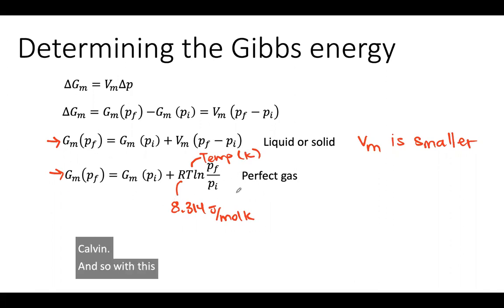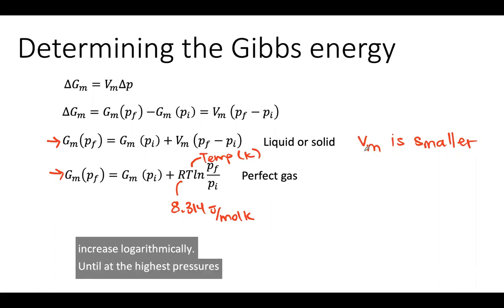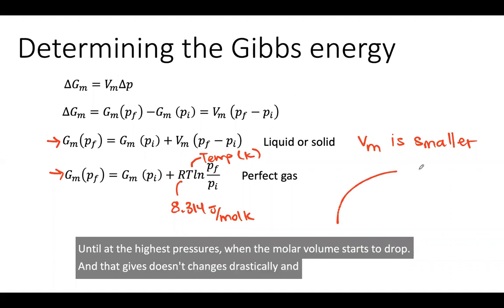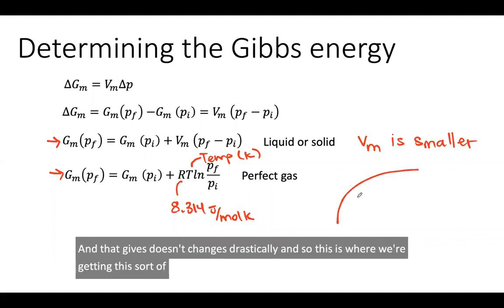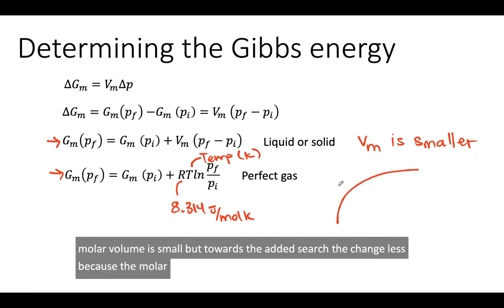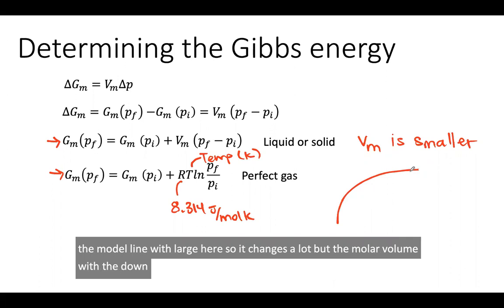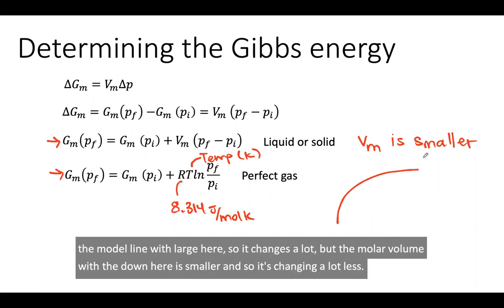What this tells us is that our molar Gibbs energy is going to increase logarithmically, until at the highest pressures when the molar volume starts to drop and the Gibbs doesn't change as drastically. This is where we're getting this sort of curve where initially it changes a lot because the molar volume is large, but towards the end, it starts to change less because the molar volume is smaller. So it's changing a lot less.